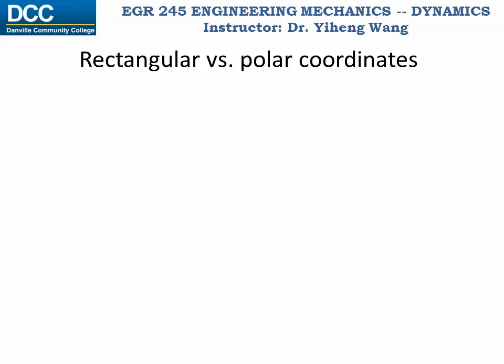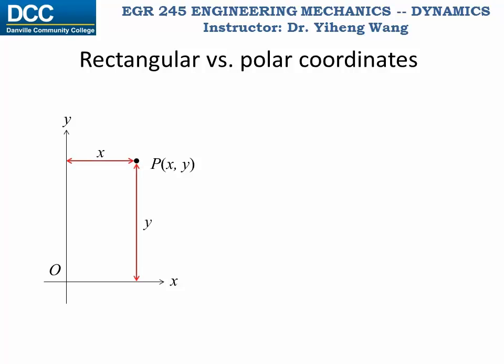You have probably already learned about polar coordinates, but just as a quick review. Here we have a rectangular coordinate system that we are most familiar with. On this coordinate system we have a point P represented by its x, y coordinates. The x coordinate represents the distance from the y axis, and the y coordinate represents the distance from the x axis.